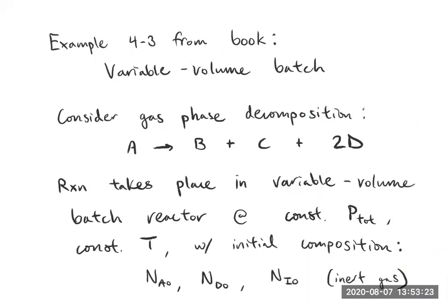The example I'm talking about is Example 4-3 from the Roberts textbook. One of the things that's a little unusual here is that this example involves a variable volume system. When you have compressible fluids, you have a different scenario depending on whether you're in a flow system or not. When we were dealing with the generalized bounds earlier, we liked batch because with no flows it was a relatively simpler system to use.